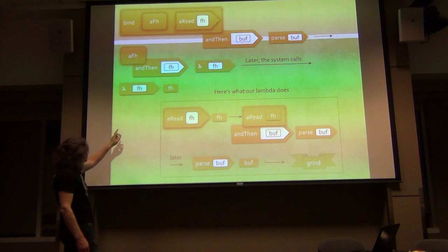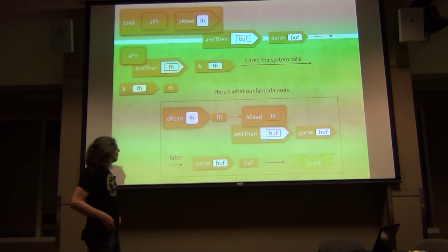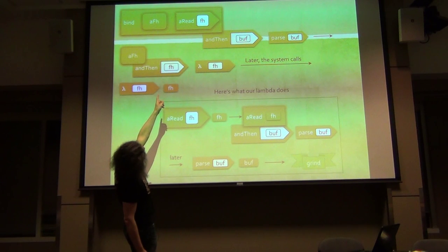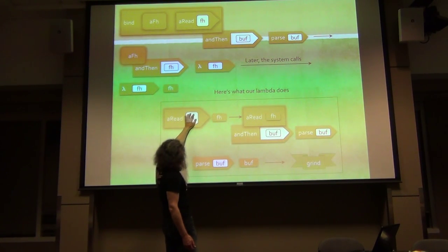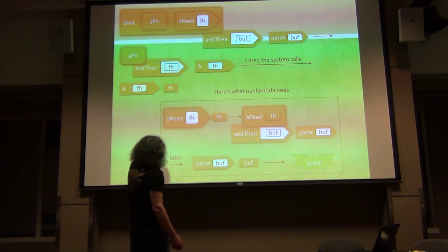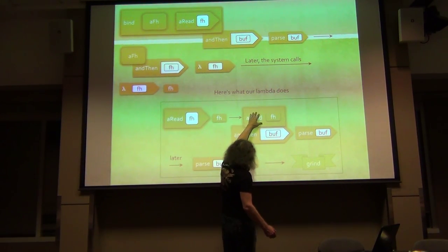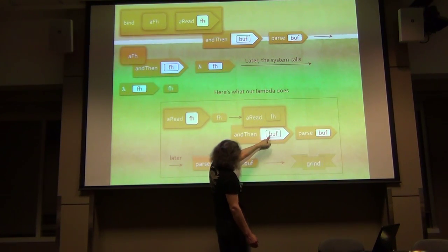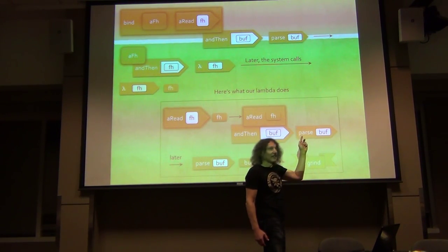What's inside the lambda? The lambda is provided with a file handle. Remember, we have the second argument to bind - async read - which requires a file handle. Now we have that file handle, so we plug it into async read. We get an async object with an ANDTHEN method that requires a continuation. It produces a buffer, so we just plug it with parse.